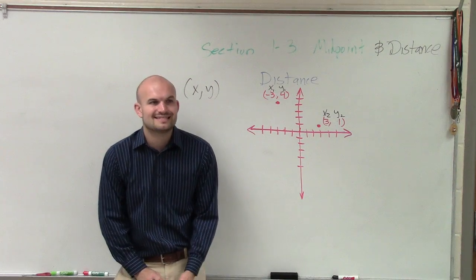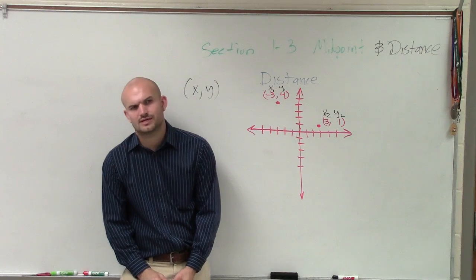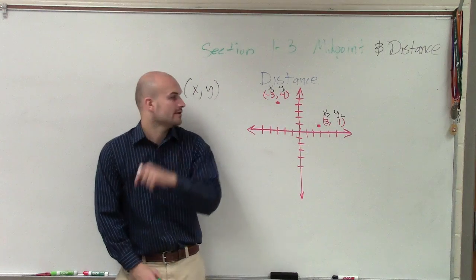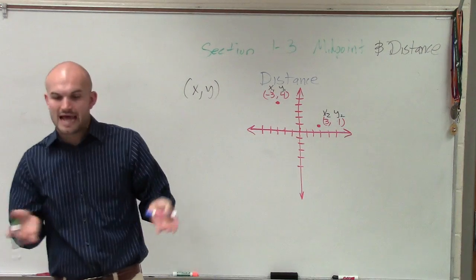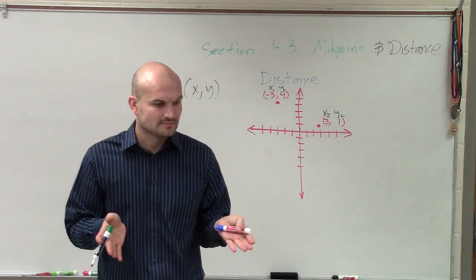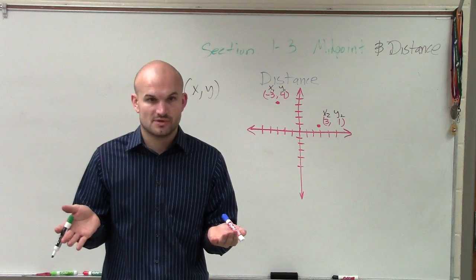So when we talked about the distance, what we determined—yes, here? Oh no, you got it. Okay. What we determined was that the absolute distance was the absolute value of the subtraction of our two terms, right?